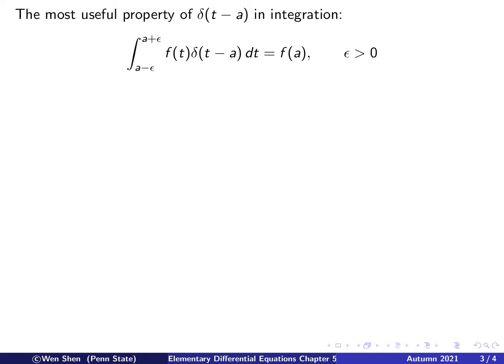Here is the most useful property for the delta function. For delta of t minus a, where you have an impulse at t equals a: if you integrate over any interval (a minus epsilon) to (a plus epsilon) for any epsilon bigger than 0, then the integral of a function f(t) times delta(t minus a) dt equals the function f evaluated at a.